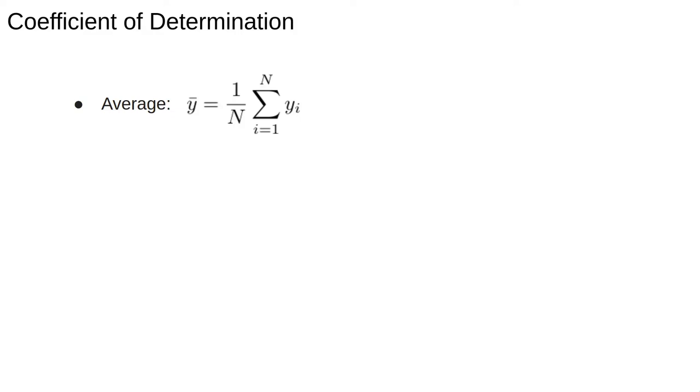We define averages as before with the bar over the corresponding letter, and the residuals, sometimes called the errors, denoted by E. These are the difference between the observation Y and the model prediction F. Now we define three quantities.